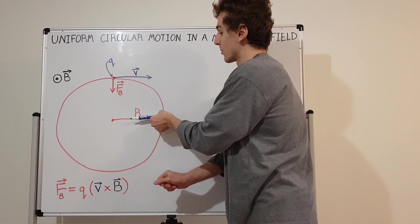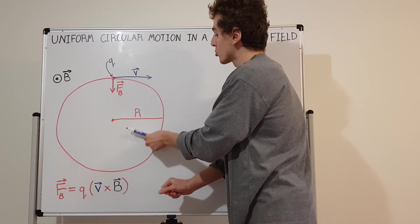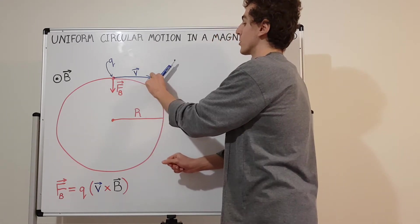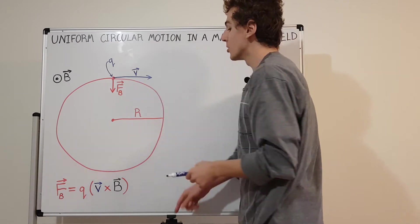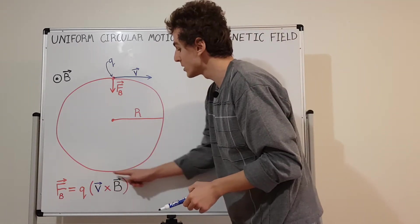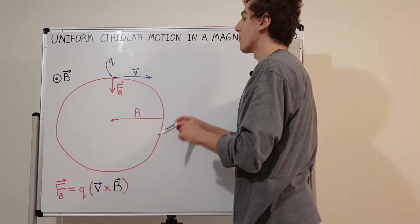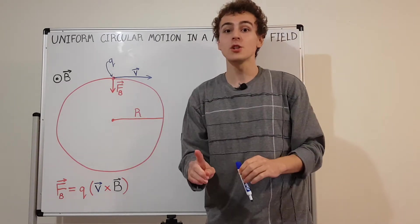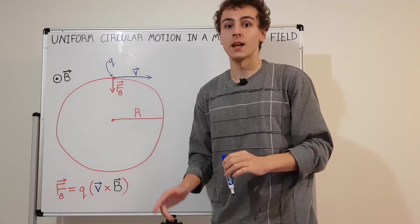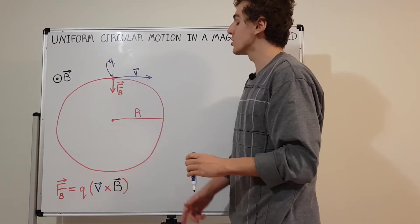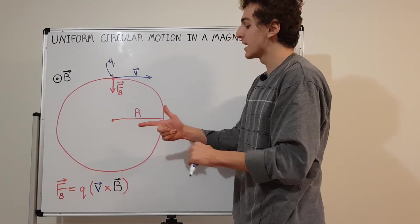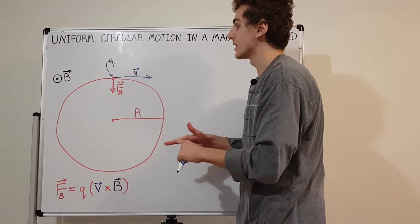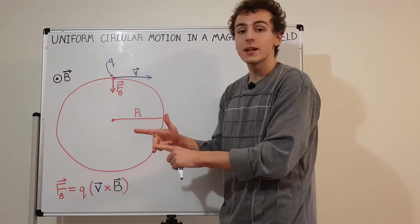Why is it inwards? We have two choices for it to be perpendicular — why is it inwards rather than outwards? It's inwards because this is a positive sign. And for it to be positive, it has to point this way because of the conventions of the right hand rule. So if you take your right hand, your index finger can be the velocity and your middle finger can be the magnetic field.